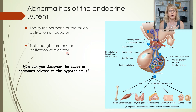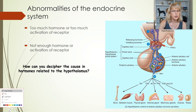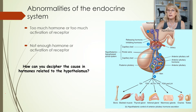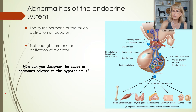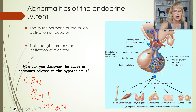So how can you decipher the cause — like, who's to blame? You need to understand two different stories. The hypothalamus, when it wants more cortisol, releases CRH, which causes the anterior pituitary to release ACTH, which causes the adrenal gland to release cortisol. That's one story.